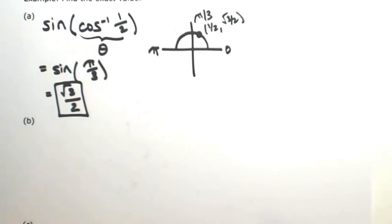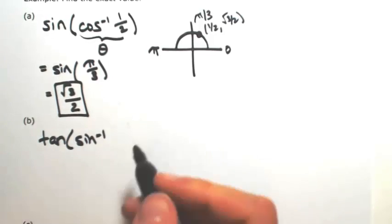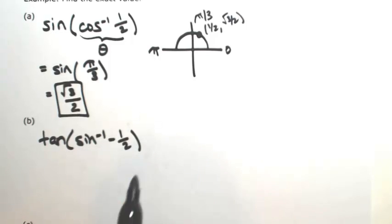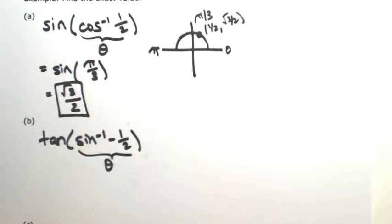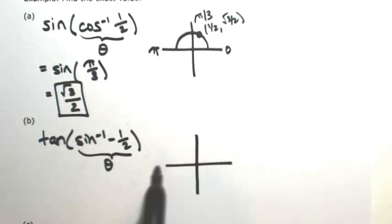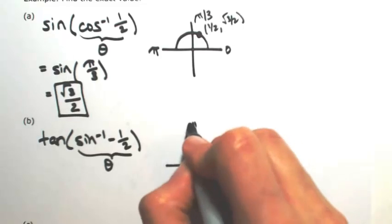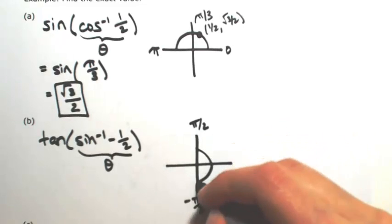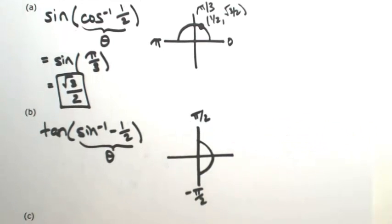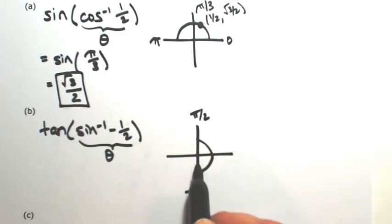Let's try the tangent of the inverse sine of negative one-half. An inverse sine is just an angle, so let me call that theta. Since we're talking about inverse sine, the domain restriction of sine was between negative pi over two and pi over two, so we can only be looking on the right side of the unit circle. I'm looking for the angle whose sine is negative one-half — in other words, whose y-coordinate is negative one-half.